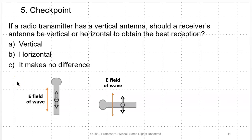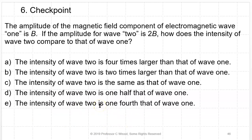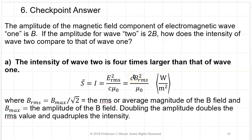A radio transmitter has a vertical antenna. Should a receiver's antenna be vertical or horizontal for best reception? The electrons in the receiver antenna dance in the electric field direction, so you want the antenna oriented in the electric field direction — vertical, matching the transmitter. If wave 2 has magnetic field amplitude 2B while wave 1 has amplitude B, wave 2 has 4 times the intensity of wave 1, because intensity depends on B_RMS², and B_RMS is amplitude divided by √2, so doubling the amplitude quadruples the intensity.